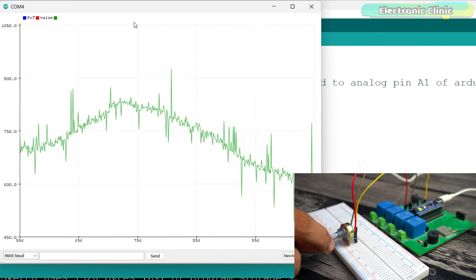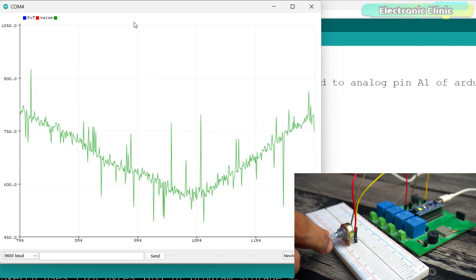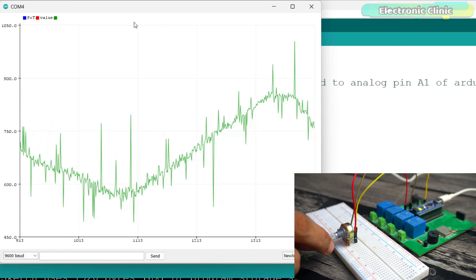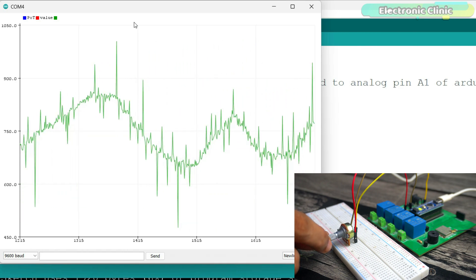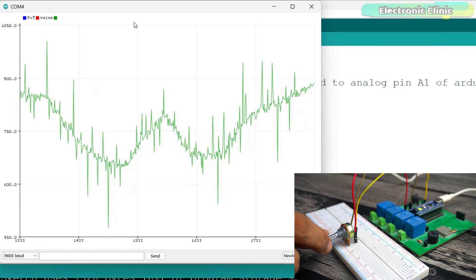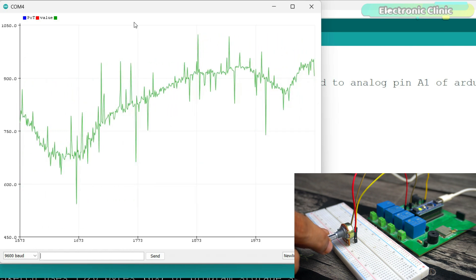When the signal is noisy, it means that the readings are jumping up and down a lot. This makes it hard for the Arduino to know what the actual value is. If we try to use this noisy signal to control motors or other devices, they will not work smoothly. The motors might jerk or move unpredictably, which is not good.